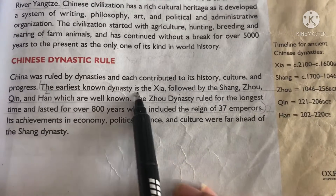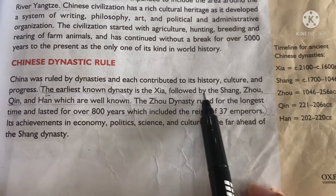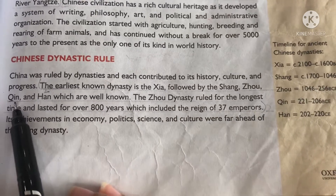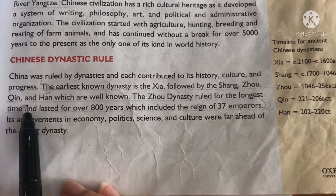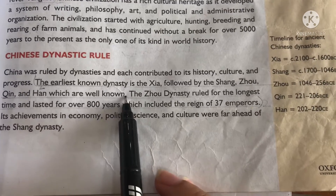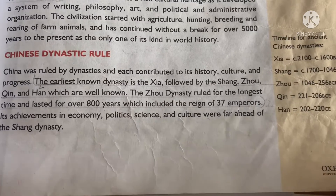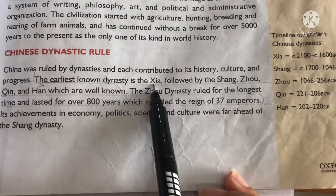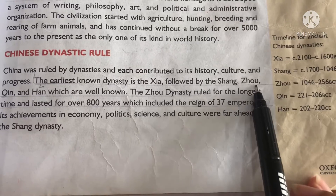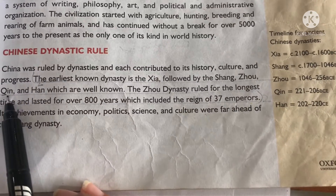The earliest known dynasty is the Xia, followed by the Shang, Zhou, Qin, and Han, which are well known. The correct pronunciations of these Chinese dynasties are: Xia, Shang, Zhou, Qin, and Han.